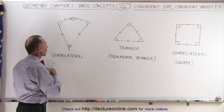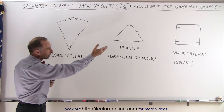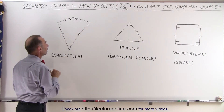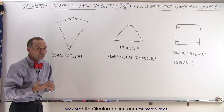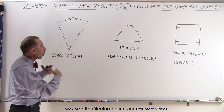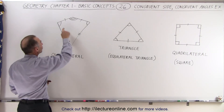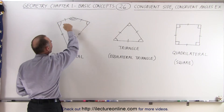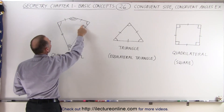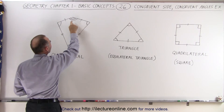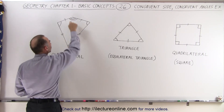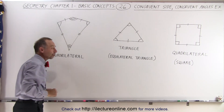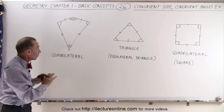Here we have another quadrilateral. It looks quite a bit different from our square. We have four sides, but notice that not all angles have the same measure, so not all angles are congruent. However, these two angles appear to have the same measure because they share the same angle symbol, so these two angles are congruent but are different from the other two angles. These other two angles are not congruent with each other because one has two curved marks and the other has three, which indicates they are not congruent.